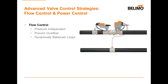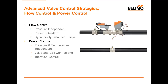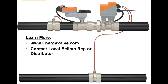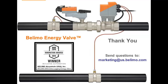To review our two control modes: we discussed flow control, which is pressure independent, prevents overflows in our coil, and allows us to dynamically balance our loops. Power control is pressure and temperature independent, lets the valve and coil work as a single unit, and gives us improved control over our space. Thank you very much for joining me today on this Bilemo webinar. To learn more about the Bilemo energy valve, please go to our website www.energyvalve.com or reach out to a local Bilemo representative or distributor. If you have any questions regarding this webinar, forward them to marketing@us.bilemo.com and we'll get you an answer as soon as we can. Thanks again, and have a nice day.